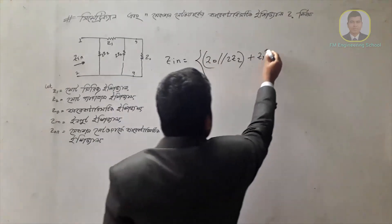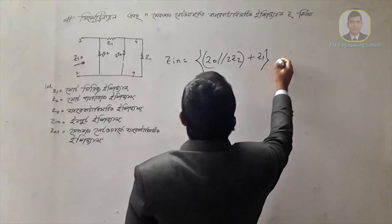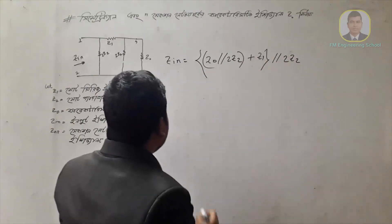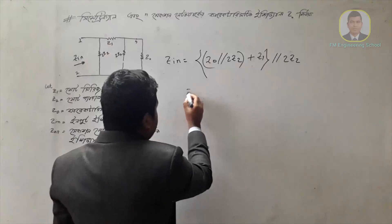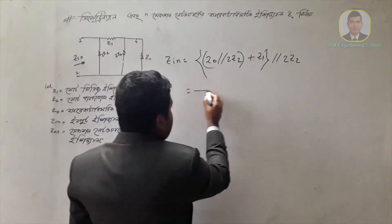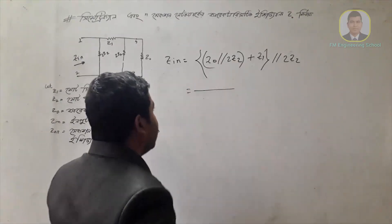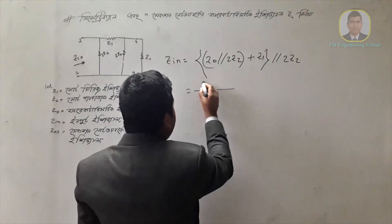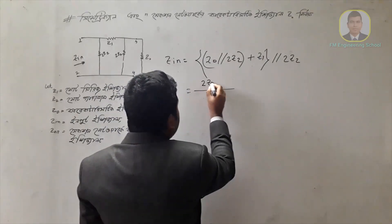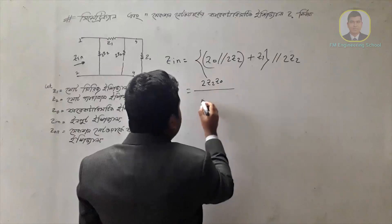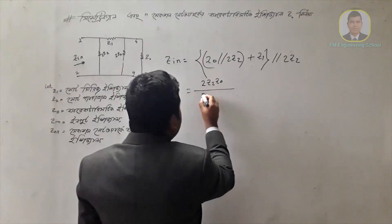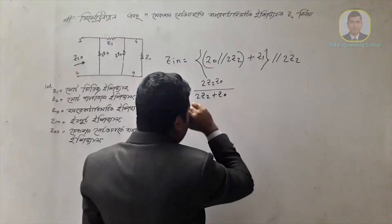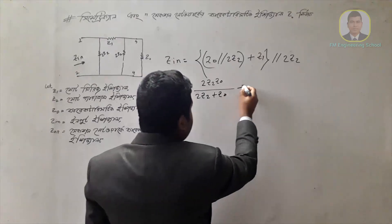This means the value of Z0 is equal to zero. If you have a value of Z0, at the value of Z1 equal to zero, this means the value of 2Z2, Z0, then 2Z2, Z0 plus Z0.